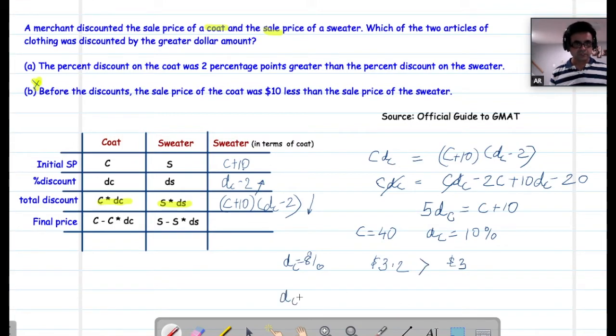If we take DC equal to 12%, which is about 2% greater than 10%. CDC will be 40 multiplied by 12%. That is $4.8 and 50 multiplied by 10% is $5. The sign is reversed.